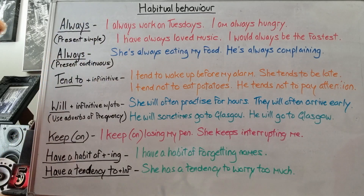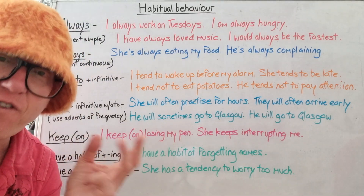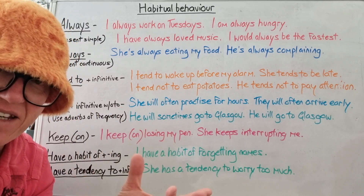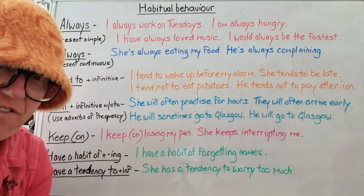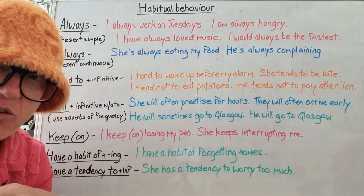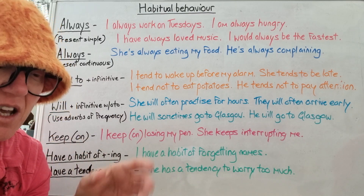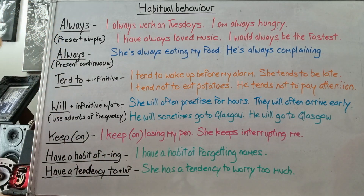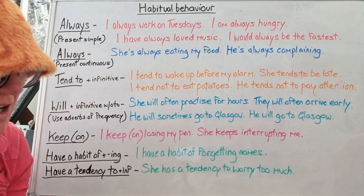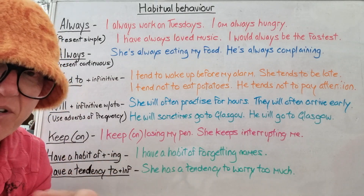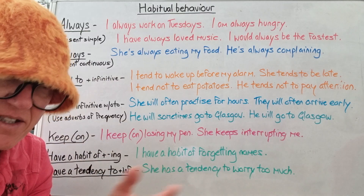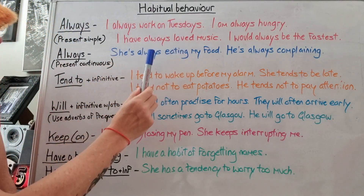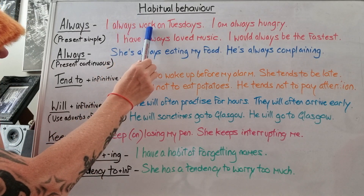Let's start with 'always'. Always is an adverb of frequency. I did a video about the position of adverbs in sentences, so I'll put this video next to that video so you can check it if you don't know the rules regarding the position of adverbs in sentences. Always is a habitual adverb, obviously. If we talk about habits, we use simple tenses — present simple, past simple. I always work on Tuesdays. The position is before the main verb.